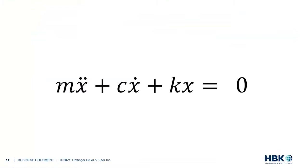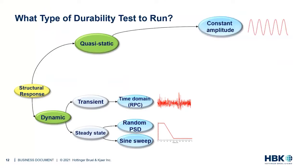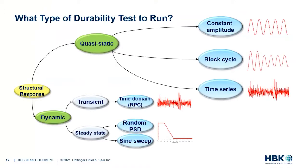So we start with quasi-static. You may have seen this flow chart before — that's the dynamics loading side we'll come to. We're interested in quasi-static loads, which can be constant amplitude, block cycles, or time series. I've added the time series one because it's one we forget. We're quite used to simplifying structural measurements to constant amplitude or block loading. Time series looks like it has frequency content, and indeed it does, but we're not using it.